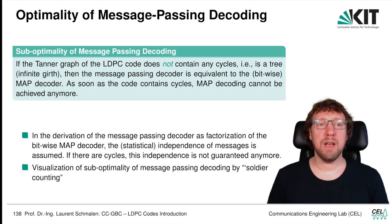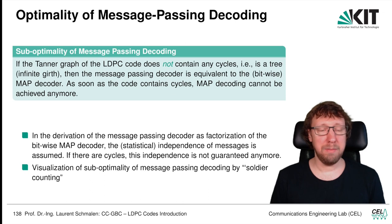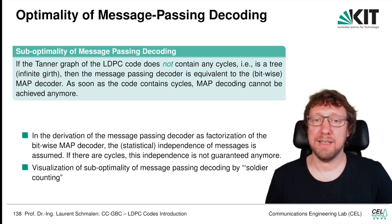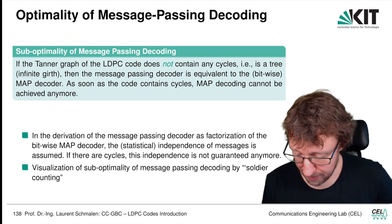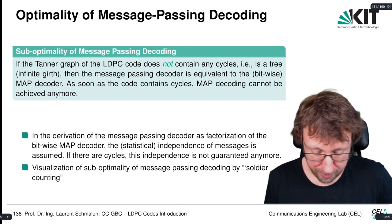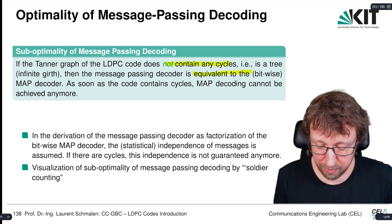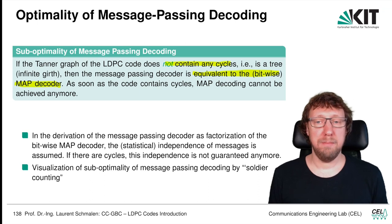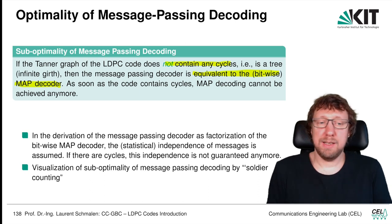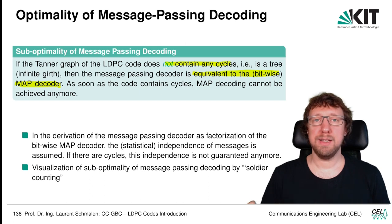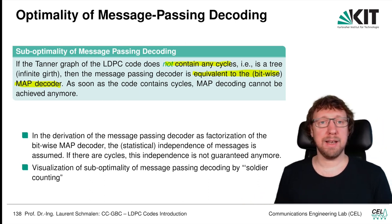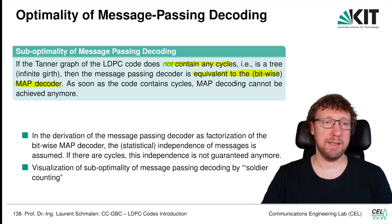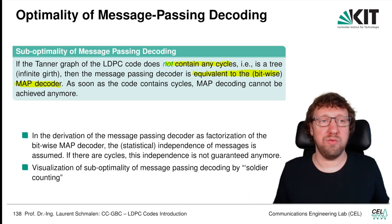The message passing decoder is suboptimal. If the Tanner graph of the LDPC code does not contain cycles, then it is essentially optimal — equivalent to the MAP decoder. But as soon as the code contains cycles, MAP decoding cannot be achieved. This is because when we derive the message passing decoder, we assume statistical independence of the messages, and if there are cycles, we cannot guarantee this statistical independence anymore.